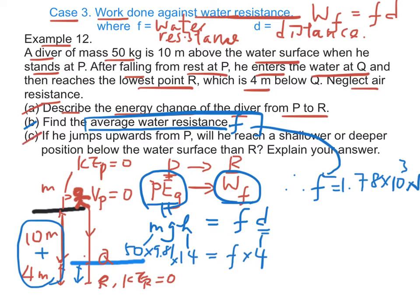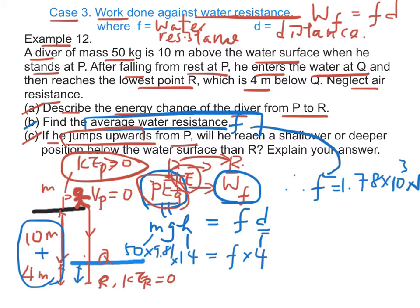Part C: if the diver jumps upwards from P, that means the kinetic energy at P will be larger than 0. Therefore, in this case from P to R, there is kinetic energy lost. Therefore, the total loss in PE and KE is larger than before. Hence, the diver reaches a deeper position.